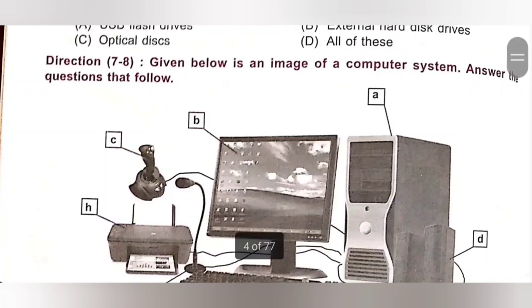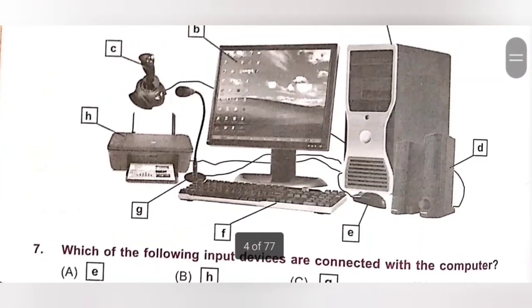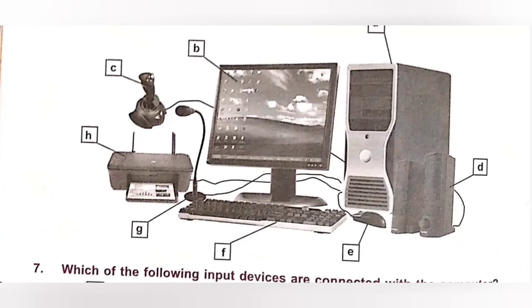Direction 7 to 8. Given below is an image of a computer system. Answer the question that follows. So here, A is a CPU, B is a desktop monitor, C is a joystick, H is a printer, G is a mic, F is a keyboard, E is a mouse, and D is a speaker.